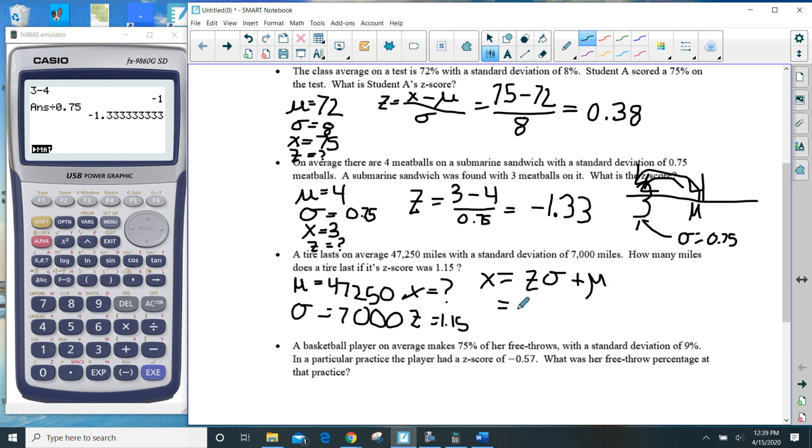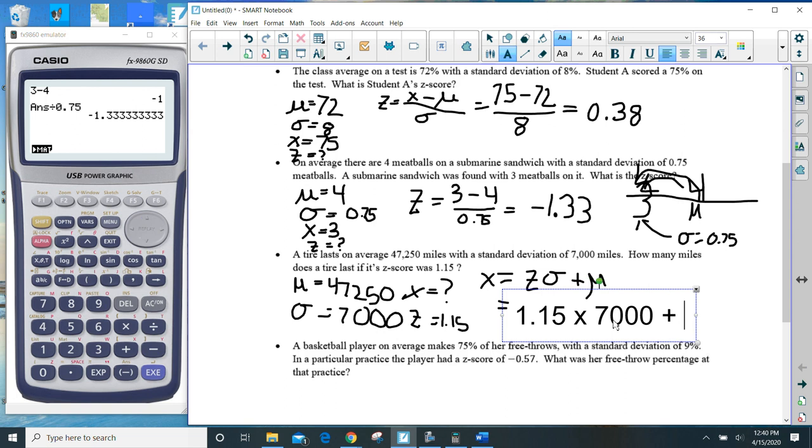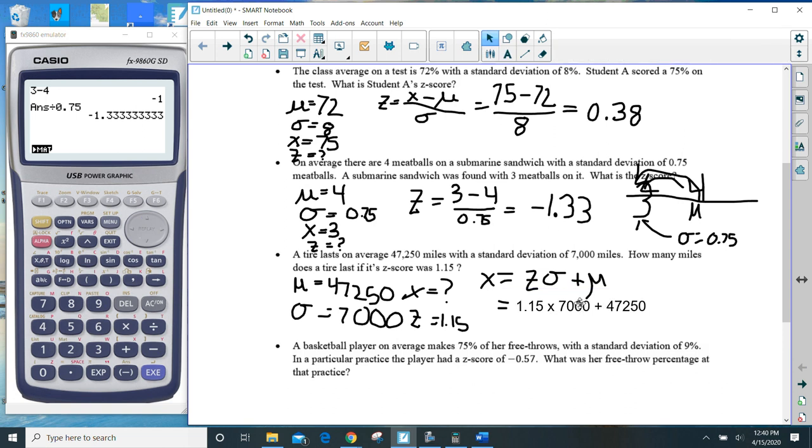And so in that situation, let's see if I can type this. That'd be Z times sigma. So let's just go ahead and do it here. So we have Z times sigma plus mu.